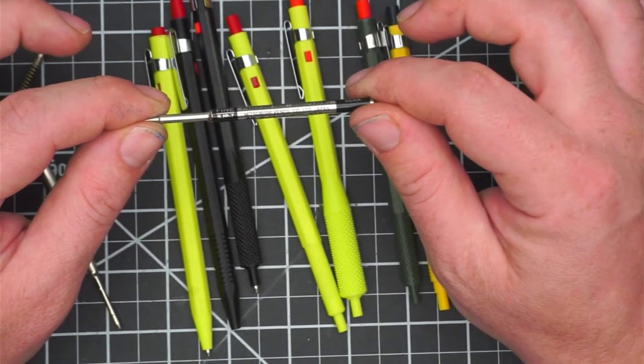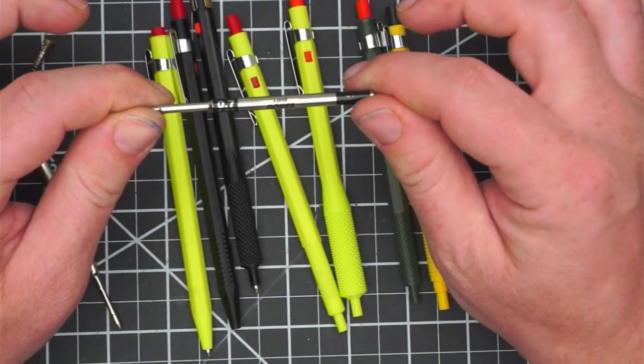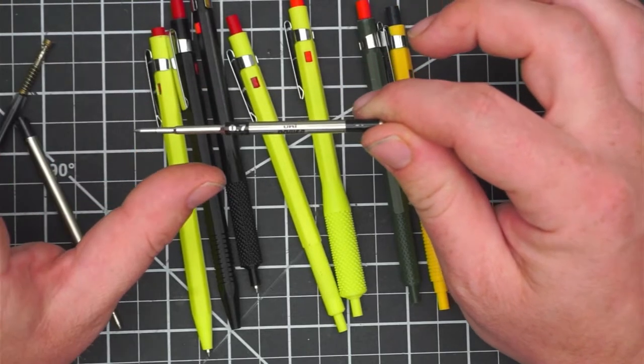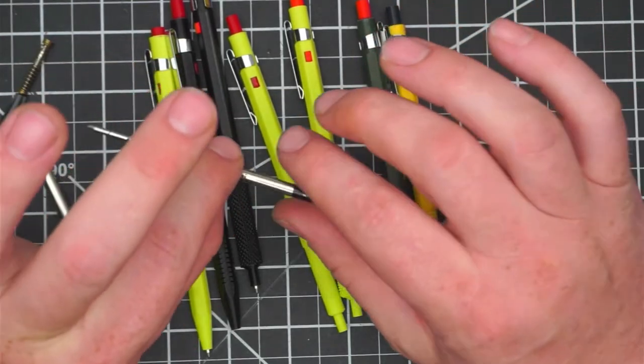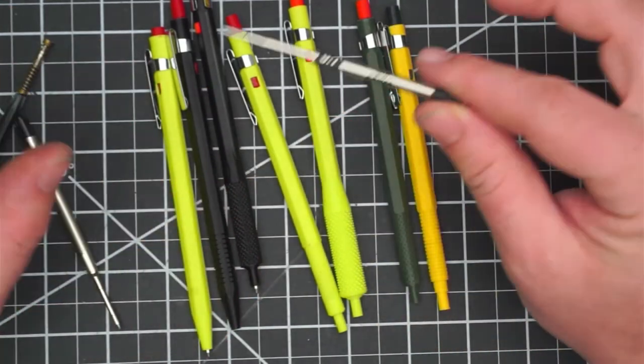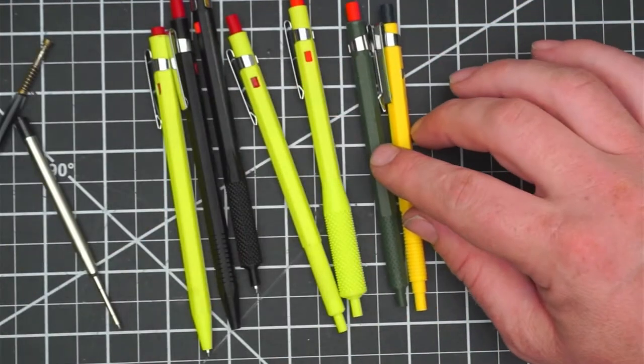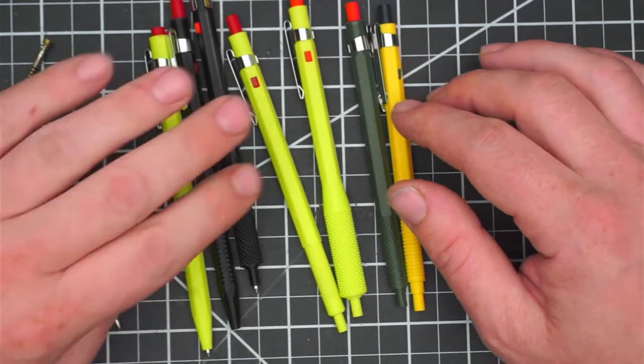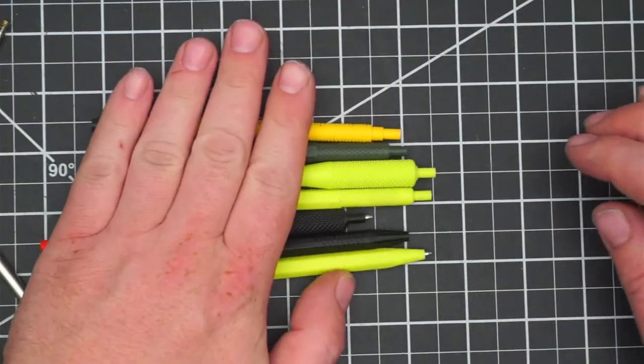This one's a Uni-Mitsubishi power tank, fine SJP-7, 0.7 millimeter ballpoint pressurized refill. Also writes underwater, in space, whatever. This one goes in the slightly shorter ones. Let's take a look at some of the pens that I made that you could print out.